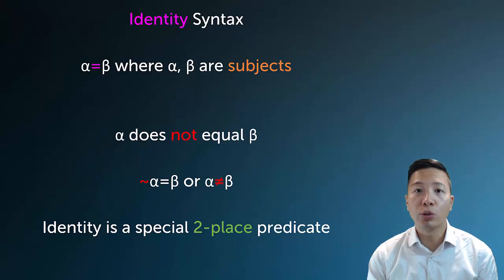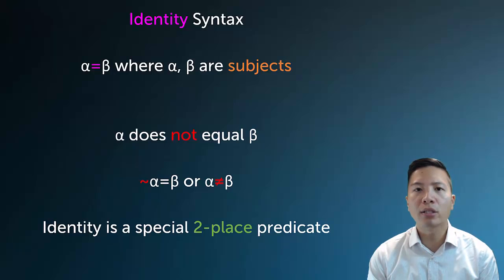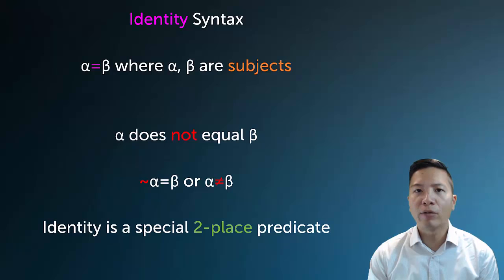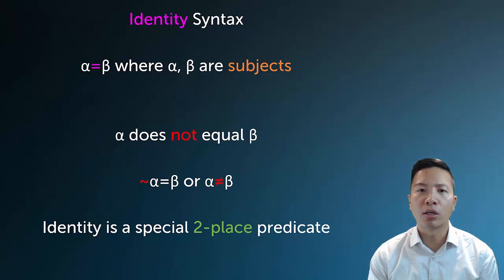The proper way to write identity is something like alpha equals beta. The things that go into the identity slots have to be subjects or terms. How do we say alpha doesn't equal beta? We write it as the negation out front, just like we would write the negation of any predicate. It's actually modifying the equal sign, not the alpha. Sometimes this is confusing, so many people adopt the does-not-equal sign in the middle, and that is acceptable in our symbolization scheme.